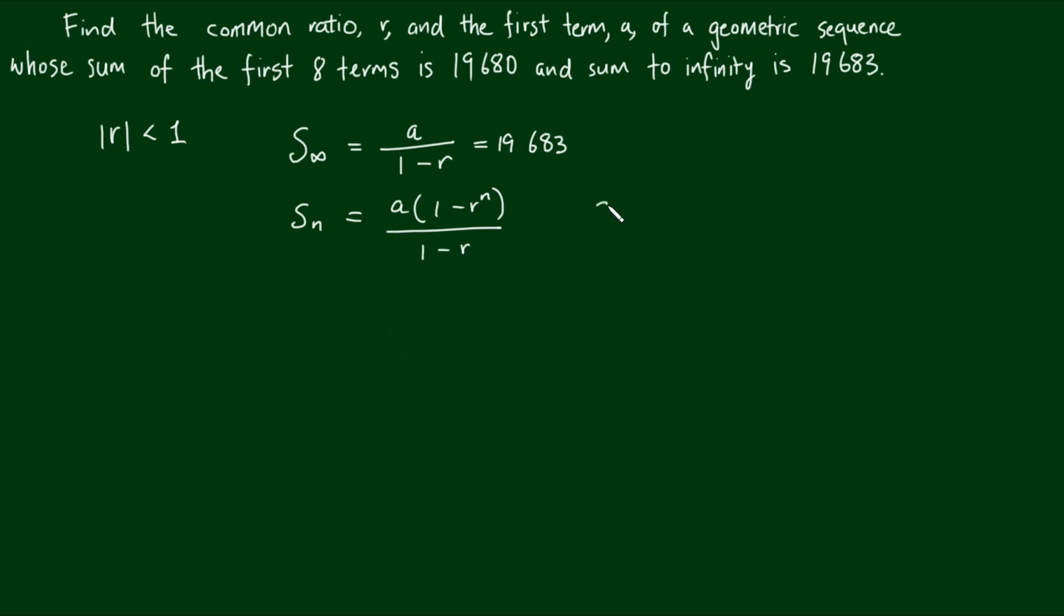In this case we are given that s sub 8, the sum of the first eight terms, is equal to a, one minus r to the power of 8 all over one minus r, and that's equal to 19,680.